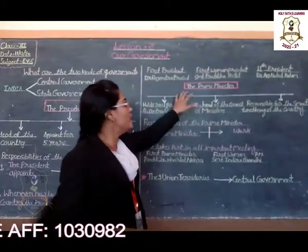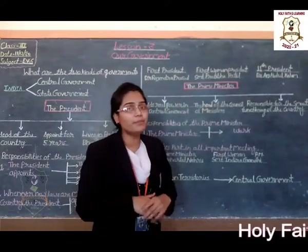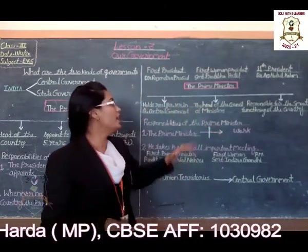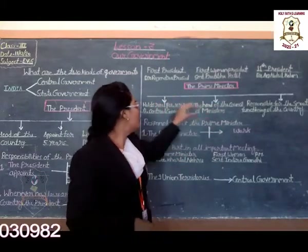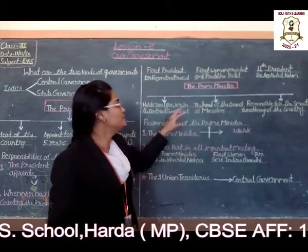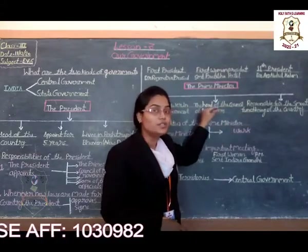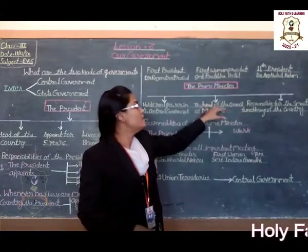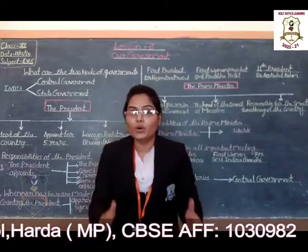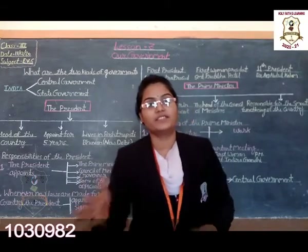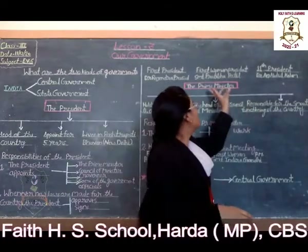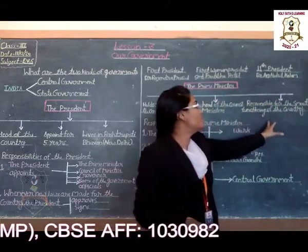Now we will learn about the prime minister. The prime minister holds the real power in the central government. The prime minister heads the council of ministers. Who are the council of ministers? Home Minister, Defence Minister, and Foreign Minister — these are some examples of the council of ministers.